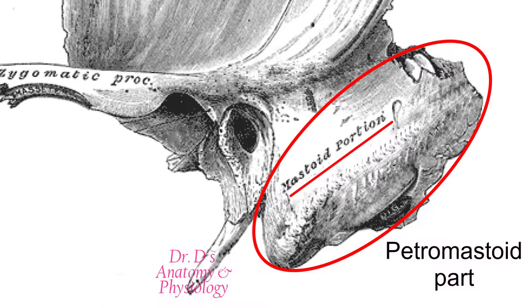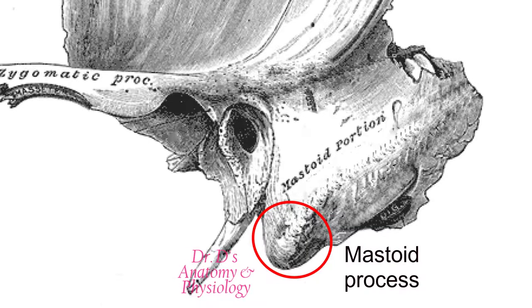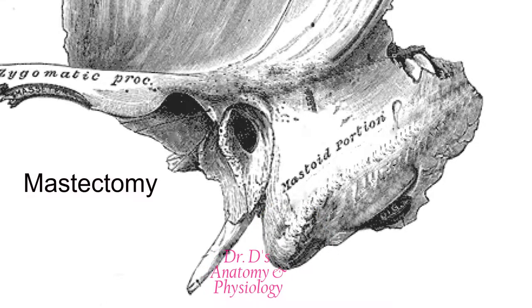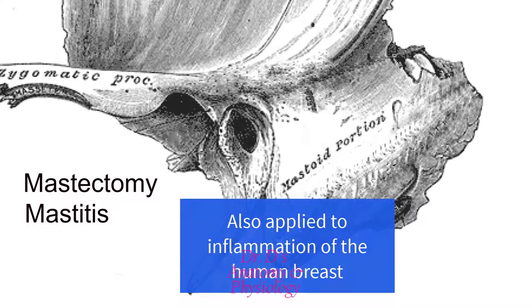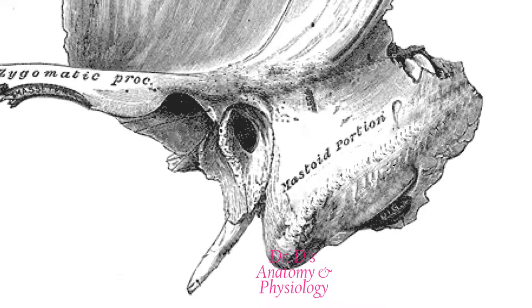Behind the tympanic part we can see the mastoid portion of the petromastoid part of the bone. The mastoid portion has the mastoid process. 'Mastoid' means 'like a breast,' so the anatomist apparently felt this process looked like a breast. The stem of this word appears in other clinical terms like mastectomy — the removal of the breast — and mastitis, which is an inflammation of the udders of a cow.